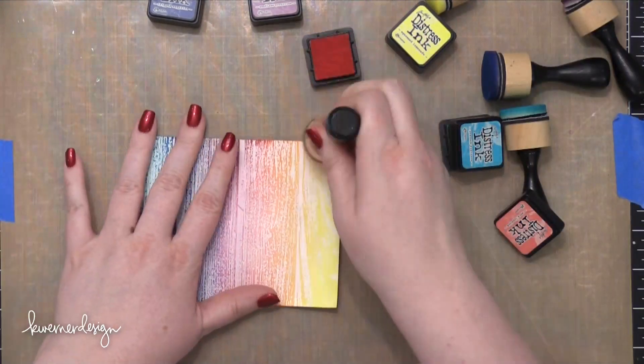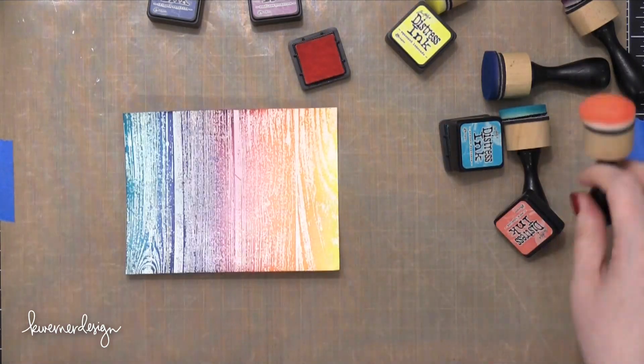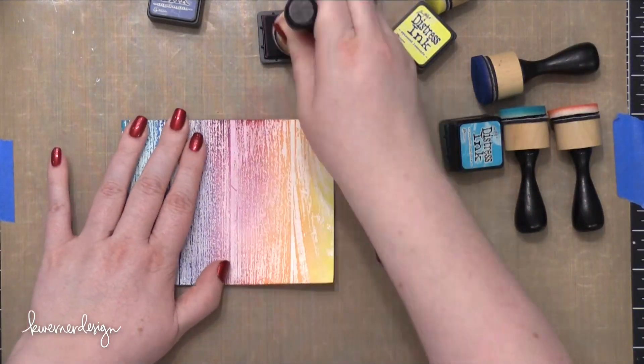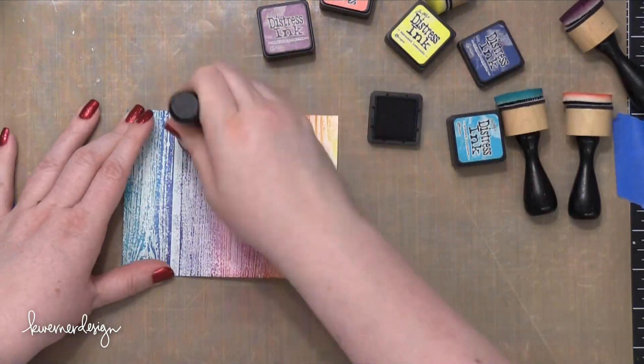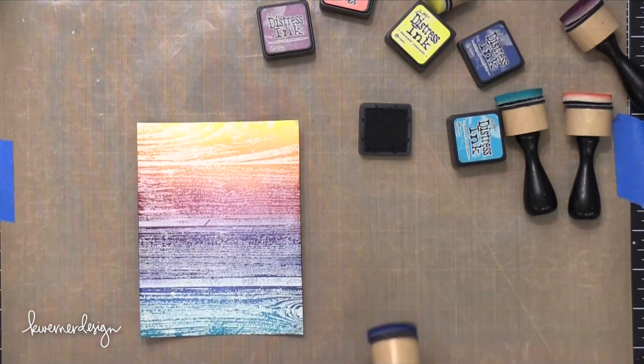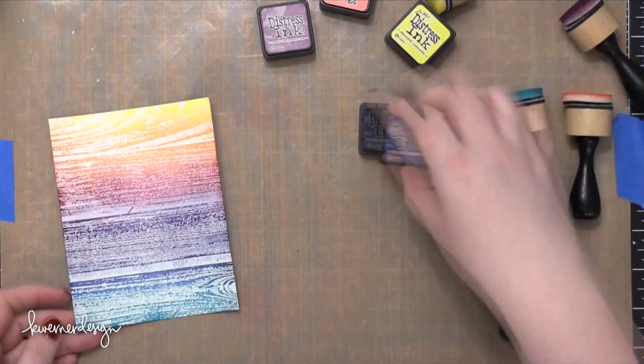So I cleaned off that craft sheet to get all the ink off and then went back and blended some of those colors once again. I realized there was a lot of yellow right at that end and I wanted to get the colors in the middle to have a little bit more space. So I just went over those colors one more time.